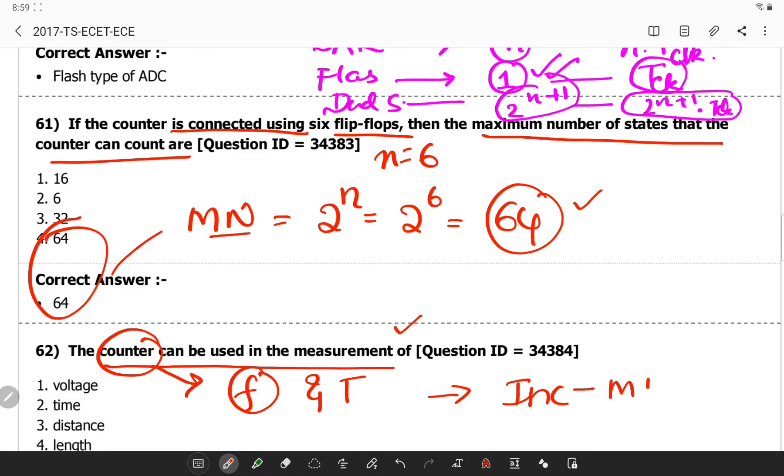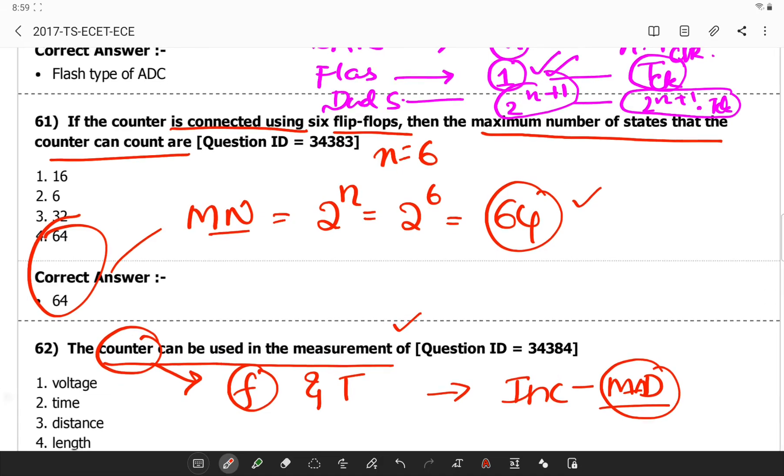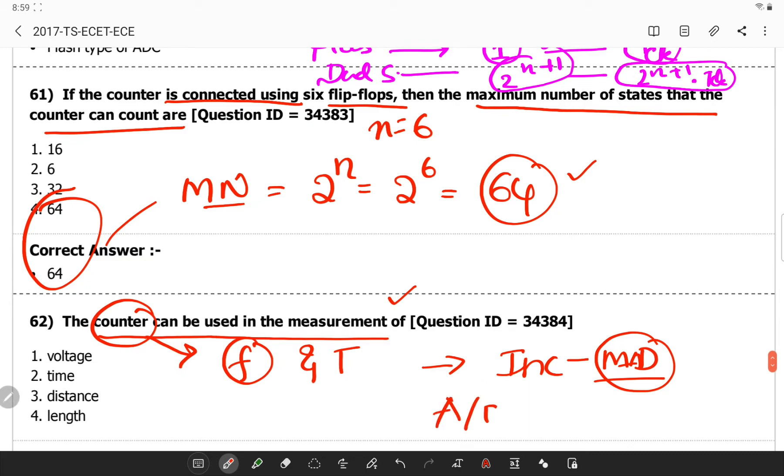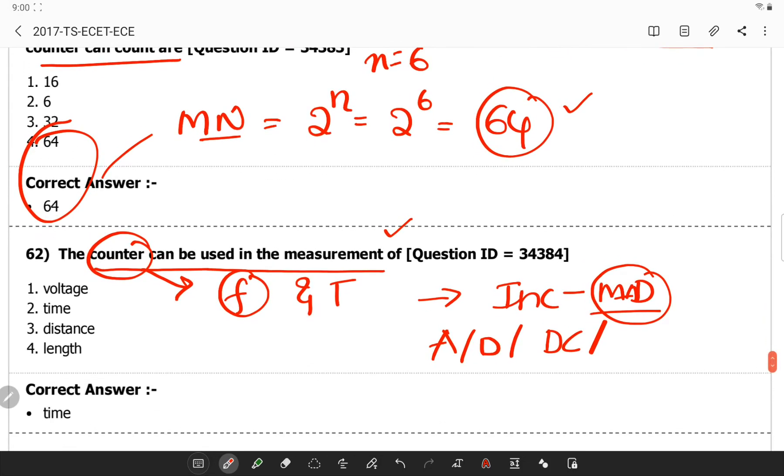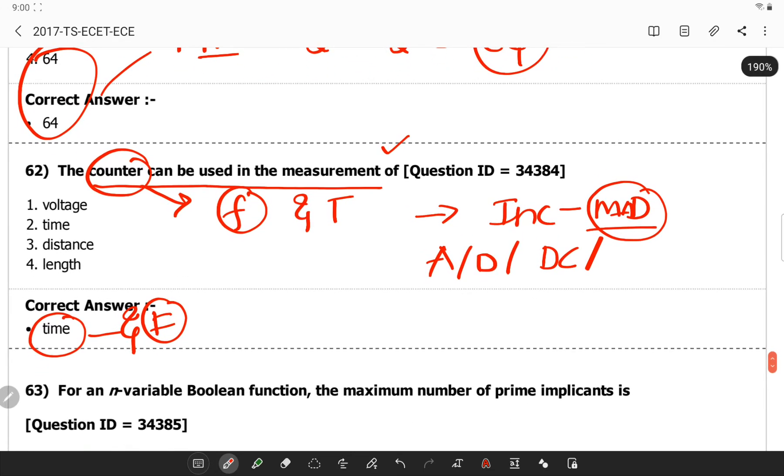These can increment memory address according to the application. These are used in various digital applications such as A to D converters, digital clocks and frequency dividers and even timing circuits. So time and frequency are the two things which the counter can be used for.